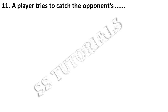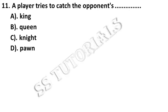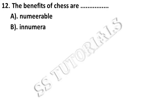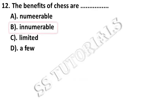A player tries to catch the opponent's dash. Answer: King. The benefits of chess are dash. Answer: Innumerable.